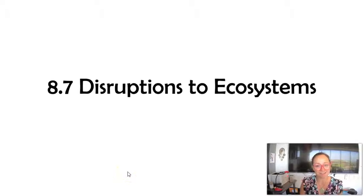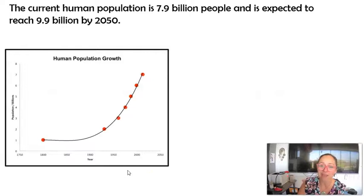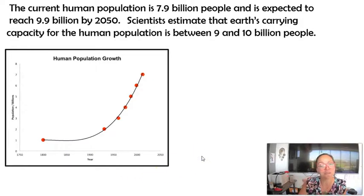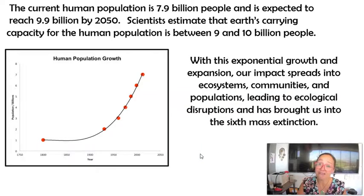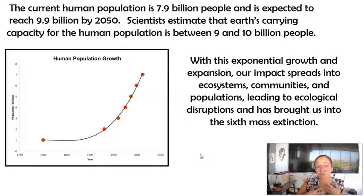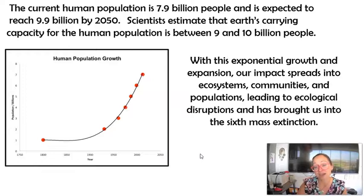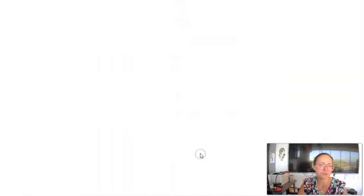This is the final topic in Bio 8.7 — disruptions to ecosystems. A lot of it has to do with human activity. Our human population has been growing exponentially for the last hundred years or so. We are at almost 8 billion people, expected to reach our carrying capacity of 9 to 10 billion by 2050. With this exponential growth, our impact has spread into ecosystems, communities, and populations, and has brought us into the sixth mass extinction.